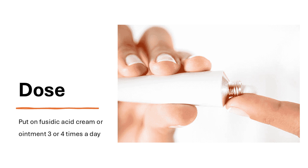How to use Fusidic Acid cream or ointment: Remove the cap and check the seal is not broken before first use. There is a small spike on the top of the cap — push this spike through the seal on the tube. Always wash your hands before use, unless treating your hands, and wash them afterwards too. Apply a thin layer of cream or ointment onto the infected area and gently rub it in. Be careful to avoid your eyes if applying it on your face.